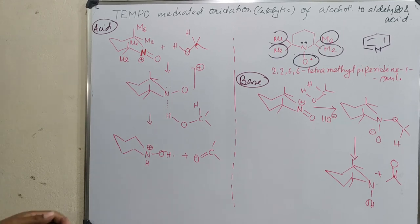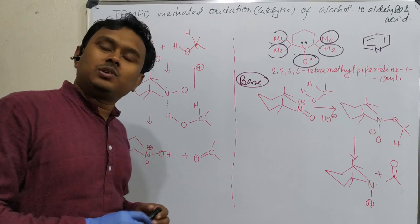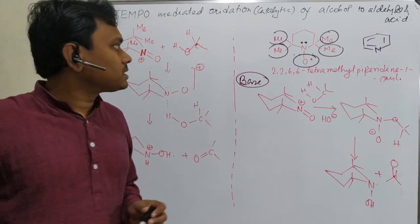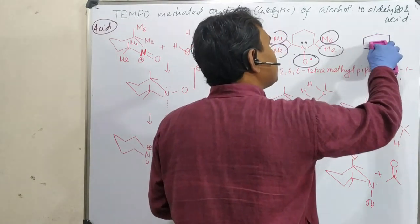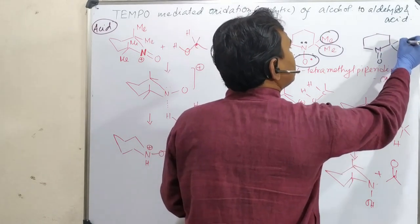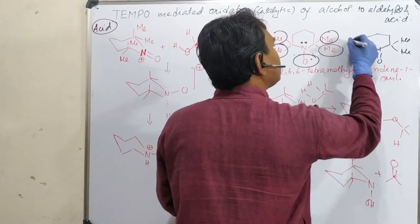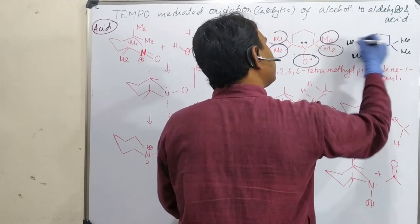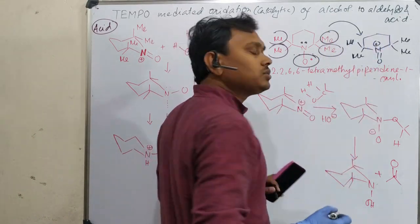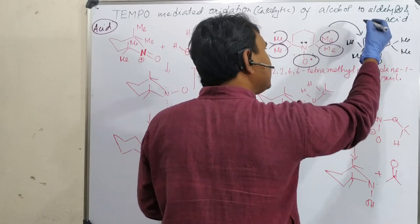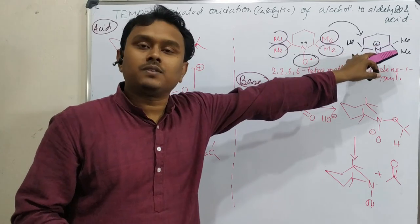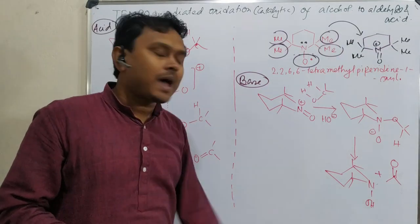Now let's discuss about the mechanism of this process. I have already written the mechanism here to save time. As we have discussed, the main active species for TEMPO-mediated oxidation is the N double bond O with tetramethyl having plus charge on nitrogen. This is the actual oxidant. Initially it will be converted into this.